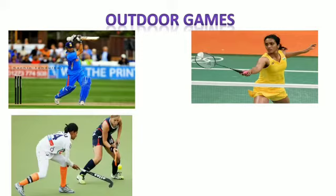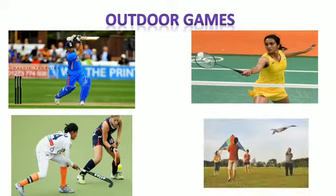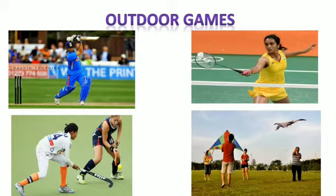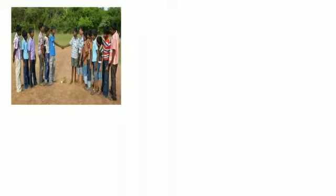The next game is hockey, for which we require a hockey stick, ball, goal post, and a big ground. Next is flying kites — we all like to fly kites. Now, we will talk about seven tiles. In this game, seven tiles are stacked in a file at the center and children run around it, forming a circle. One player from the opposition team beats the tiles and scatters them.